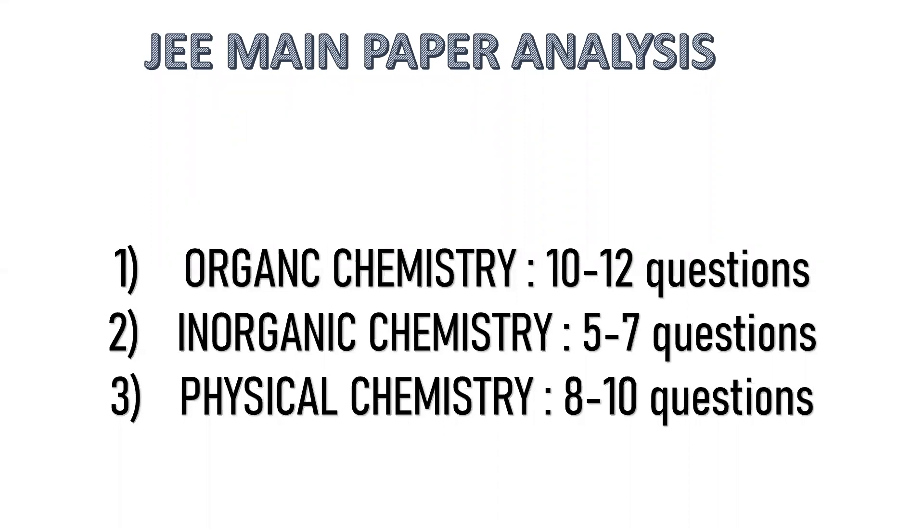This is JEE Main paper analysis. This is also my approximate analysis which I'm sharing with you all. In organic chemistry, 10 to 12 questions. In inorganic chemistry, 5 to 7 questions. Physical chemistry, 8 to 10 questions. The paper pattern and marking schemes is already discussed by Vivek Sir in the previous video. You can check it out if you have missed it. Here you can see the clear analysis where organic chemistry is having more number of questions, that means more weightage.